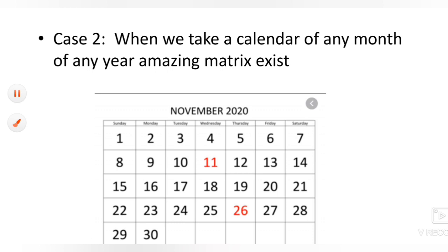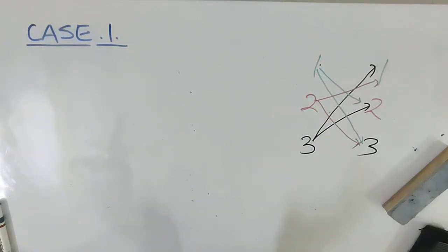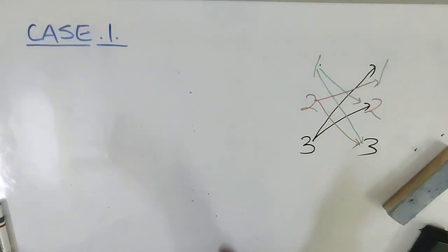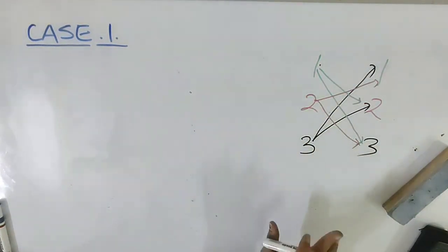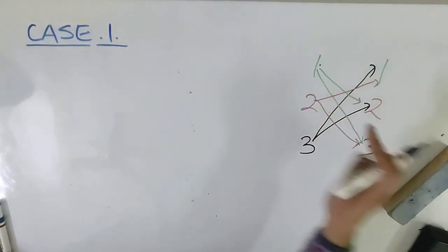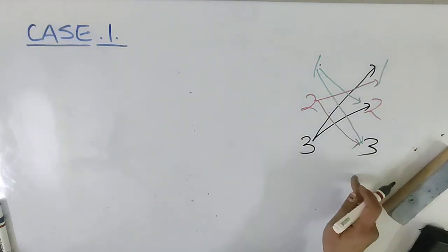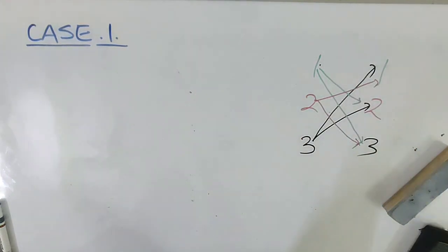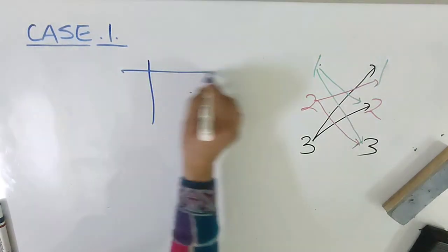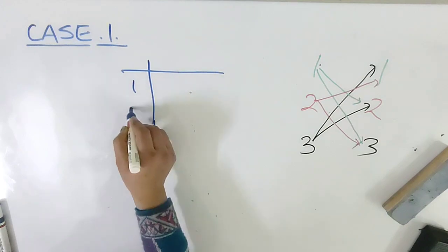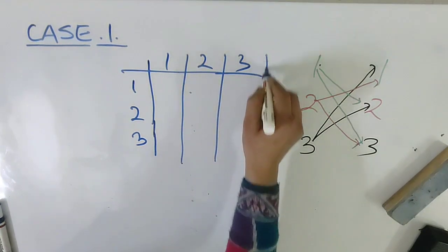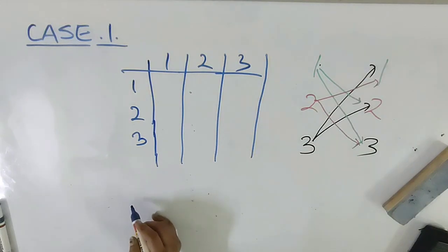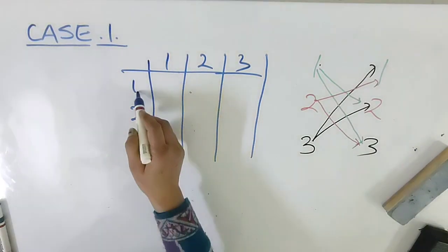Let us discuss Case 1. Let us denote the three persons as one, two, and three. I'm writing one, two, three across two axes because person one will play the game with two and three, two will play with one and three, and three will play with one and two. I will write one if a person plays a game and zero if they do not.